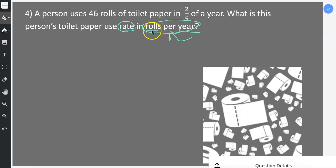Because unit rates, the units always say blank per blank. It always looks like this for the units on a unit rate.